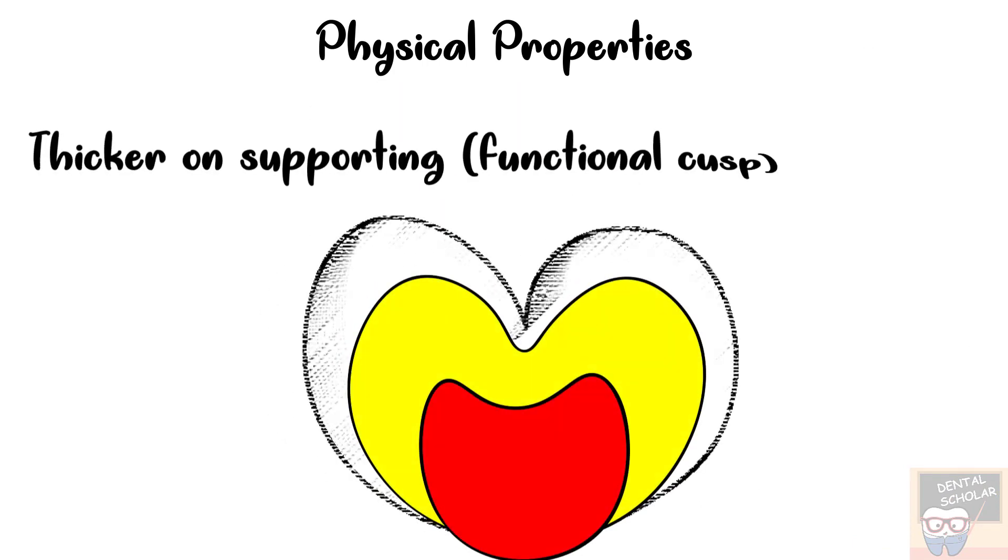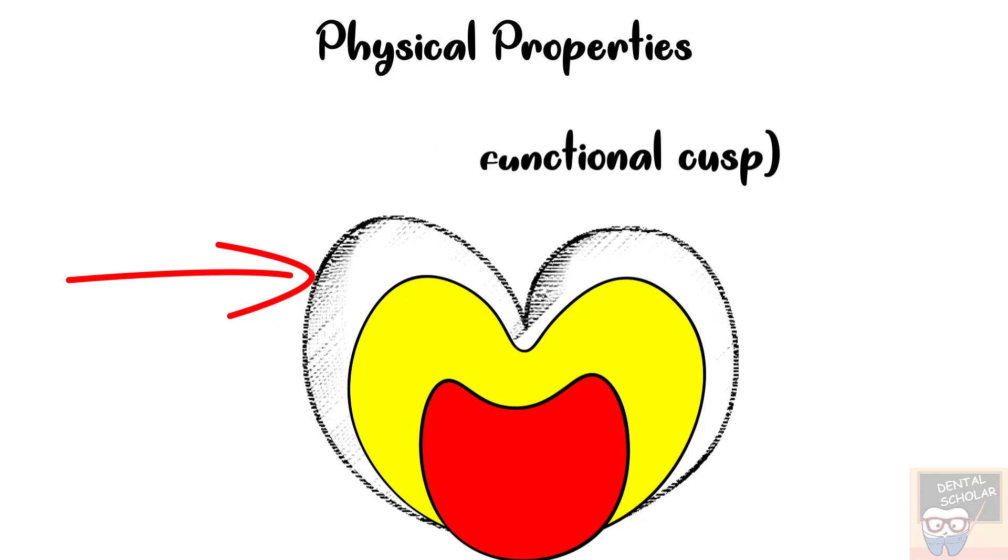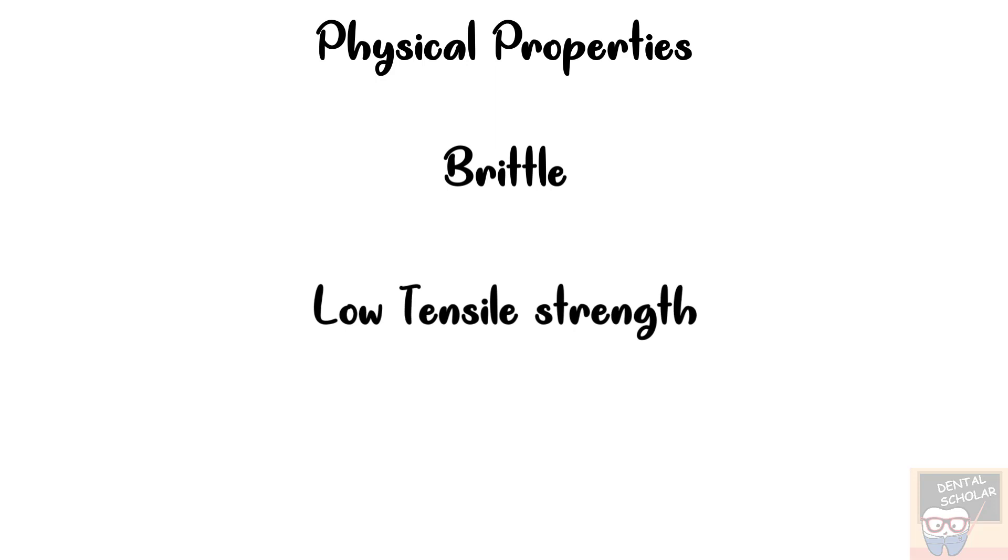The enamel is thicker on the supporting or the functional cusps. In maxillary molars, the lingual cusps are supporting and in mandibular molars, the buccal cusps are supporting. As I have already explained, enamel is brittle as it has low tensile strength.